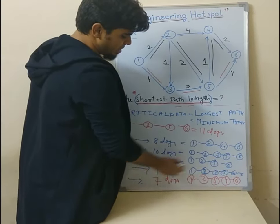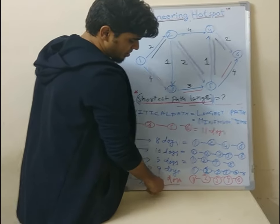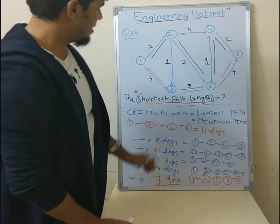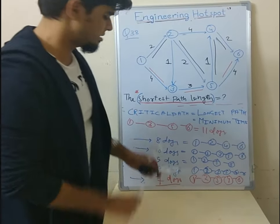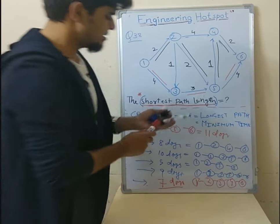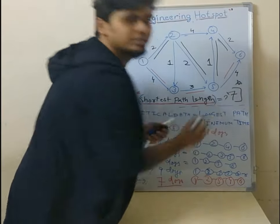From this path 8 is coming, from this path 10 is coming, from this path 9 is coming, and from this path 7 is coming. 7 days - there's nothing shorter than this. So if we follow this path 1, 2, 5, 4, 6, then our answer comes as 7 days. The shortest path is 7. This will be our answer. Thank you friends.